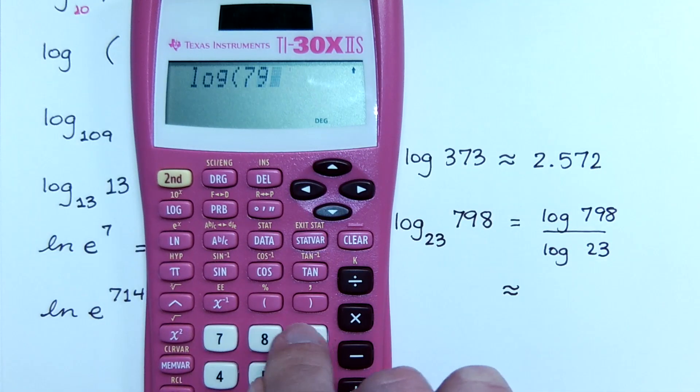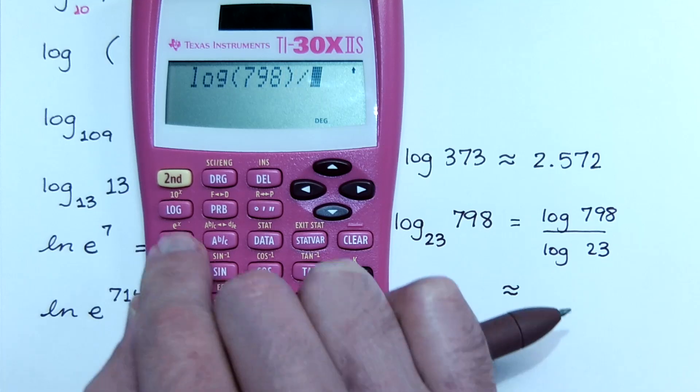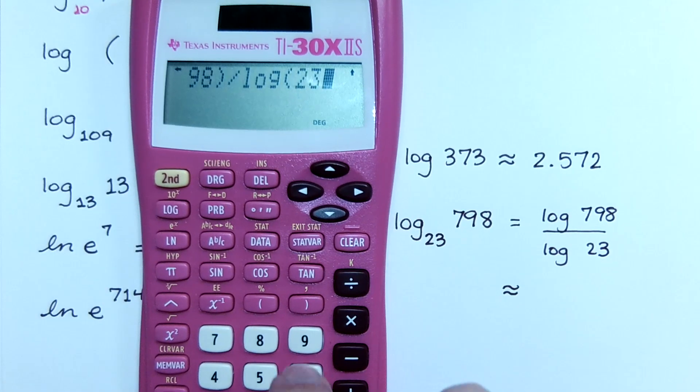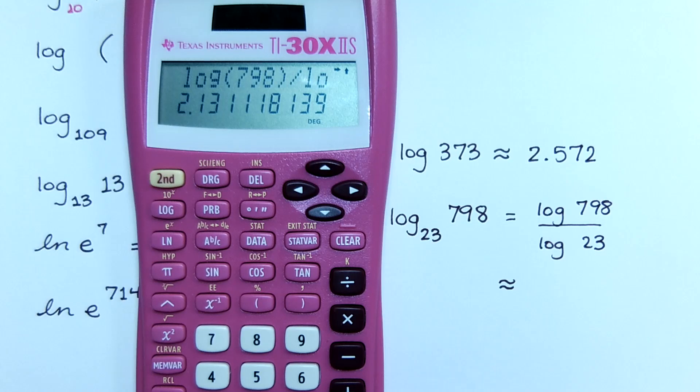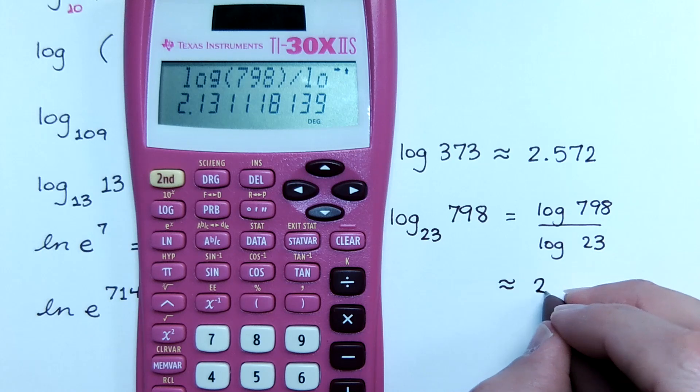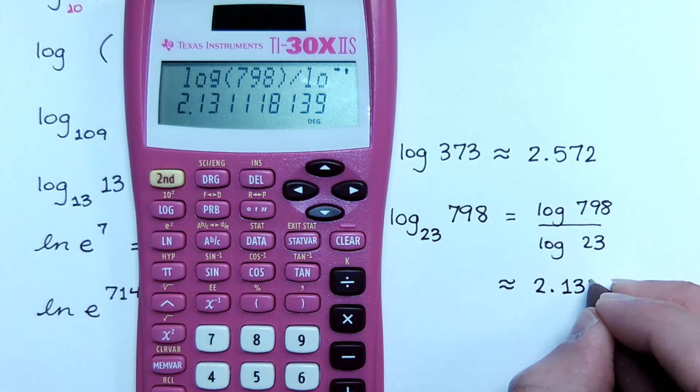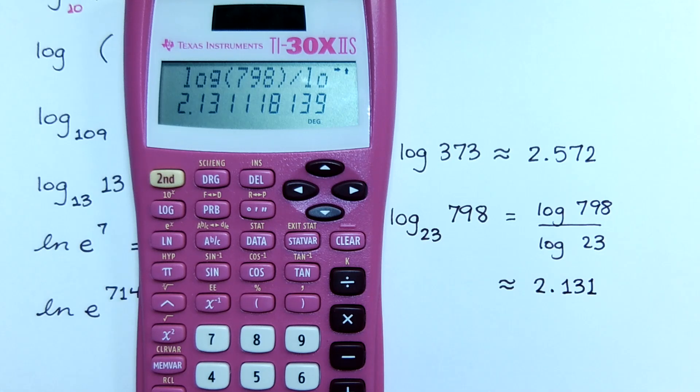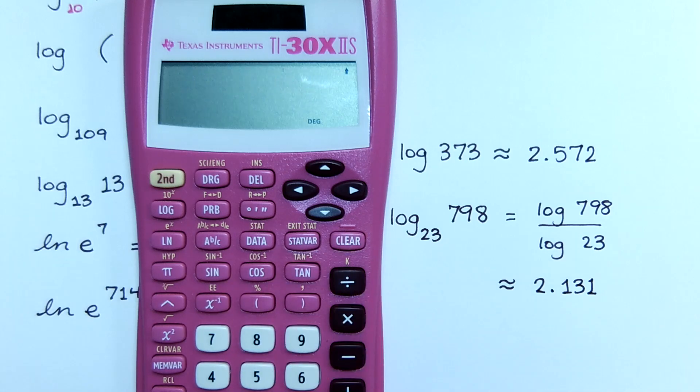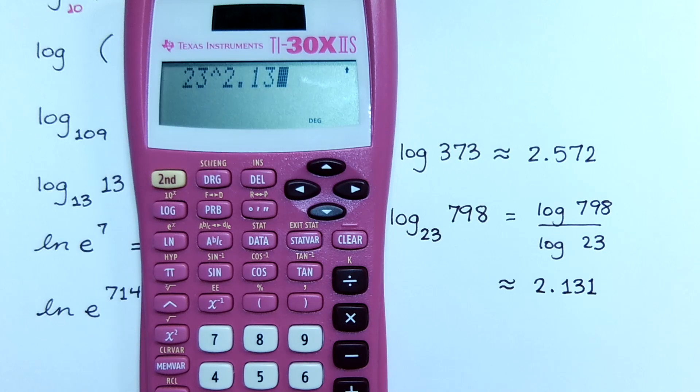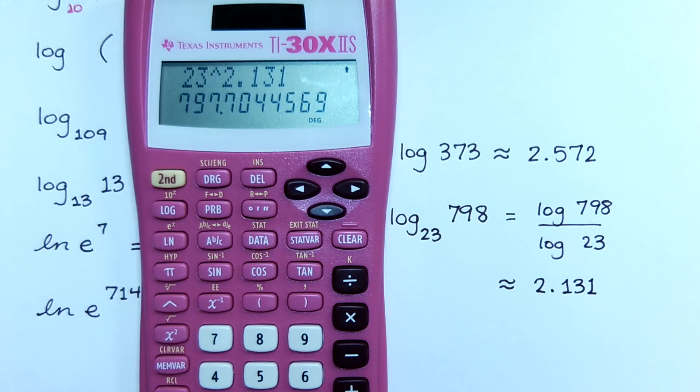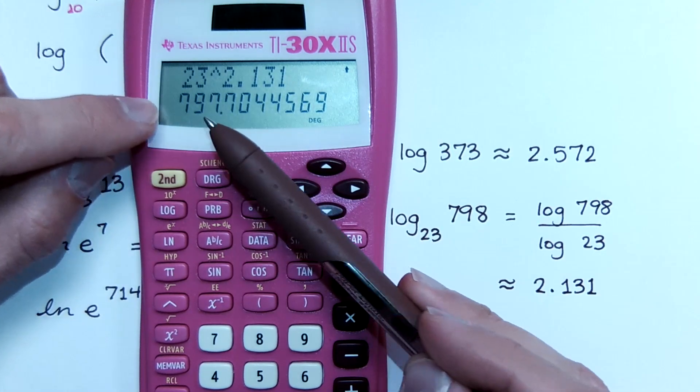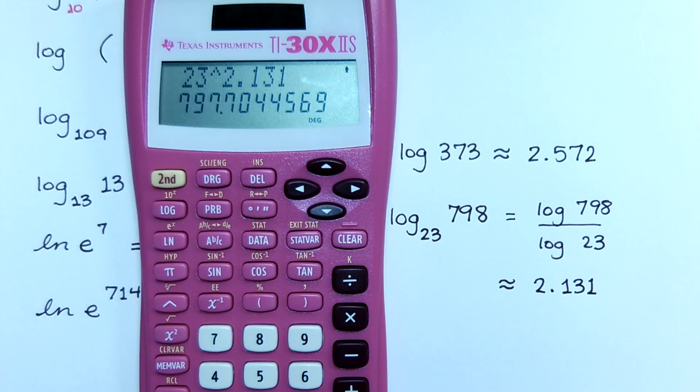Oh! I guess I should have listened to myself when I said that earlier, right? I did. I see now I'm pressing the buttons more vigorously. Is that what you guys have now? Yes. So this is approximately 2.131. Check yourself really quick on this. If I take 23 raised to the 2.131, it's not exactly 798. It's going to be close enough to let me know I'm on the right track.